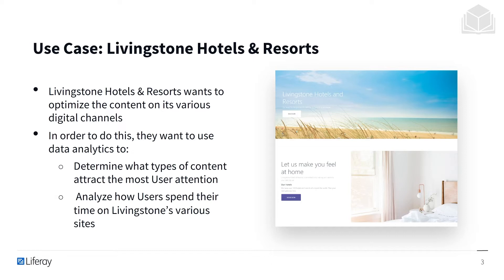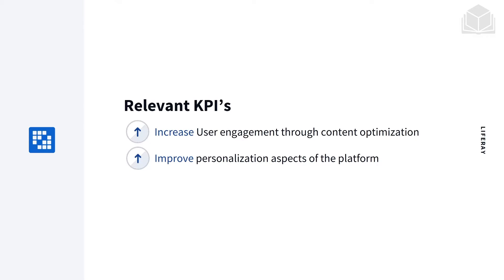Our use case is back to Livingston Hotels & Resorts. They want to optimize the contents on its various digital channels. In order to do this, they want to use data analytics to determine what types of content attract the most user attention and analyze how users spend their time on Livingston's various sites. The way that we'll measure success will be with these two KPIs: to increase user engagement through content optimization and improve personalization aspects on the platform.